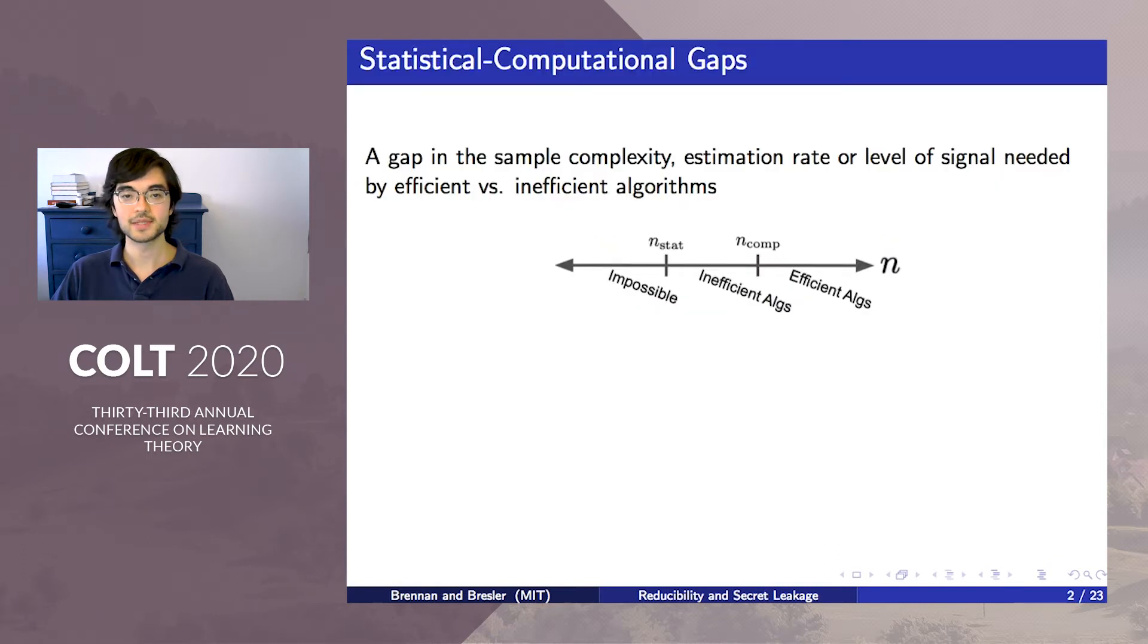A statistical computational gap occurs when the optimal sample complexity, rate of estimation, or level of signal needs to be much higher for efficient algorithms to solve a problem than for inefficient algorithms.